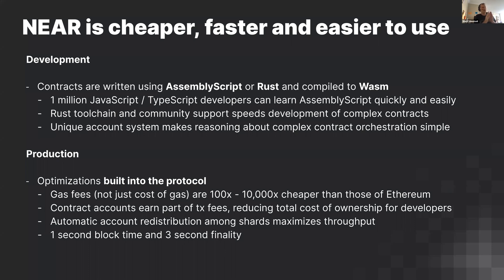The Rust toolchain is more mature, so for high-value contracts or very complex contracts we would choose Rust. But we can always have a mix of some AssemblyScript and some Rust contracts as part of the same decentralized application — of course they would be different contracts, but these contracts can communicate using cross-contract calls.